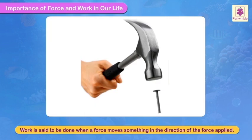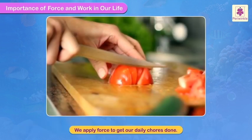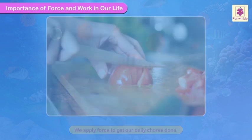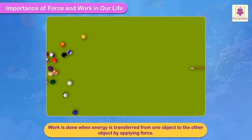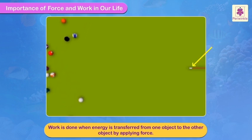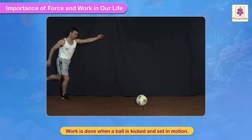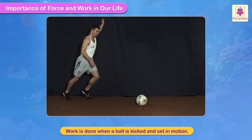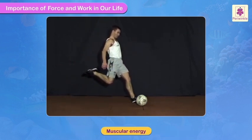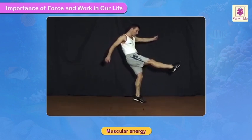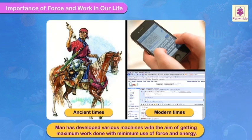Work is said to be done when a force moves something in the direction of the force applied. We apply force to get our daily chores done. In terms of energy, work is done when energy is transferred from one object to another by applying force. For example, work is done when a ball is kicked and set in motion. This work is done by the force applied to kick, using muscular energy.